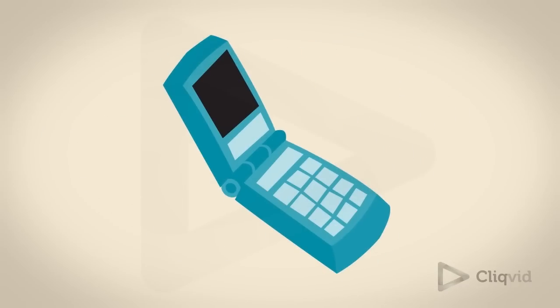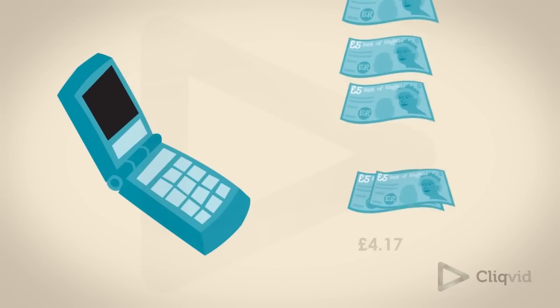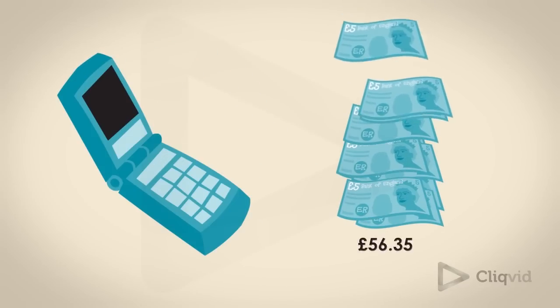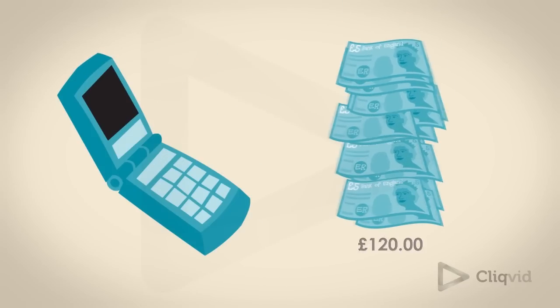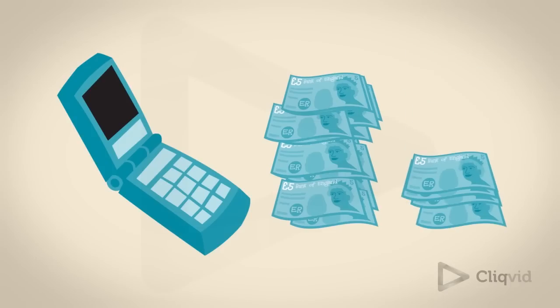For example, a business sells a mobile phone direct to a consumer. The price is £120. If the rate of VAT is 20%, then the VAT included on this transaction will be £20.